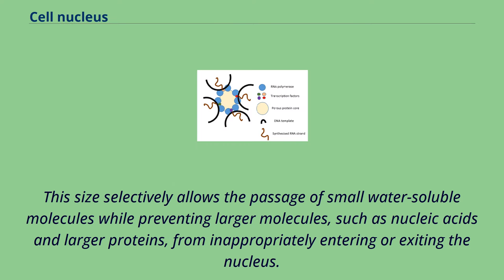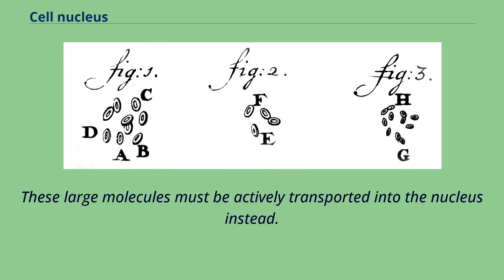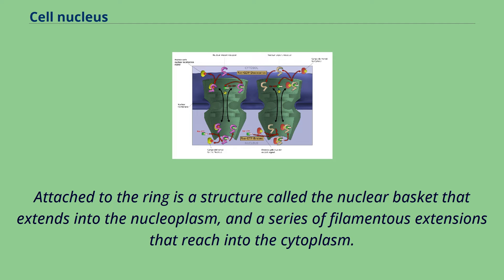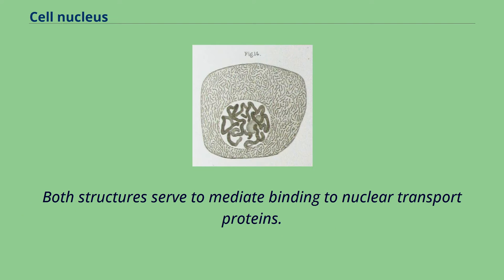This size selectively allows the passage of small water-soluble molecules while preventing larger molecules, such as nucleic acids and larger proteins, from inappropriately entering or exiting the nucleus. These large molecules must be actively transported into the nucleus instead. The nucleus of a typical mammalian cell will have about 3,000 to 4,000 pores throughout its envelope, each containing an 8-fold symmetric ring-shaped structure where the inner and outer membranes fuse. Attached to the ring is a structure called the nuclear basket that extends into the nucleoplasm, and a series of filamentous extensions that reach into the cytoplasm. Both structures serve to mediate binding to nuclear transport proteins.